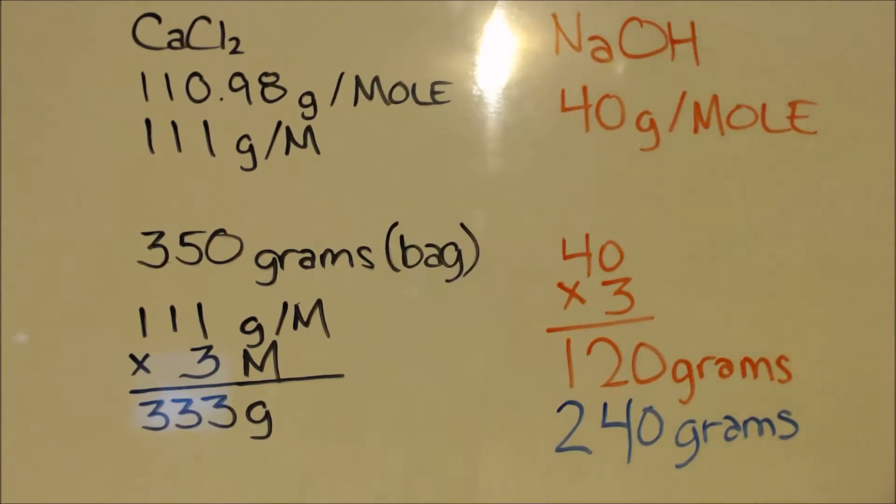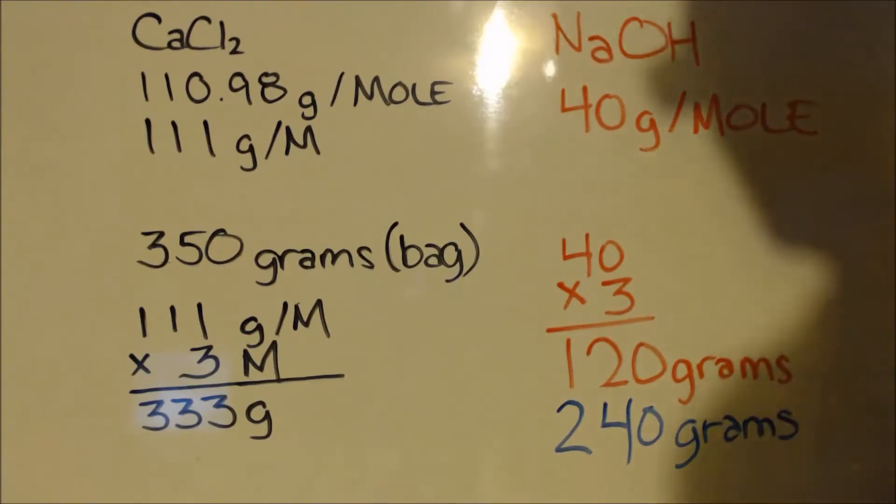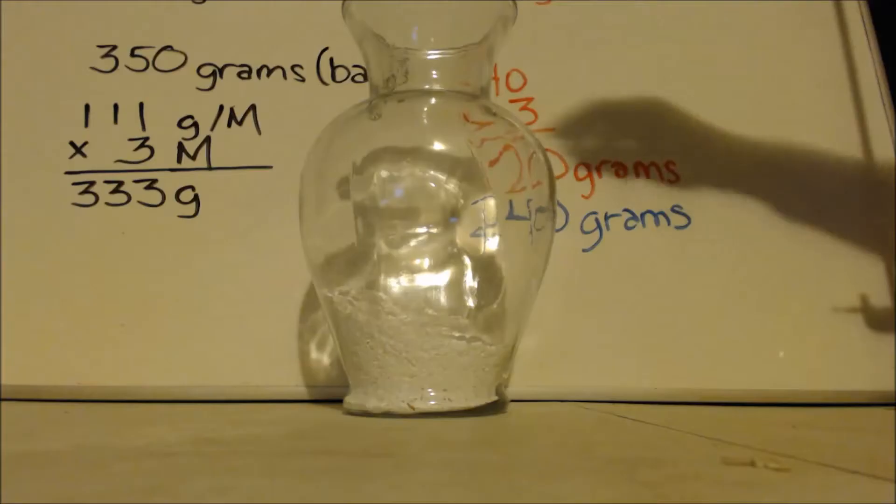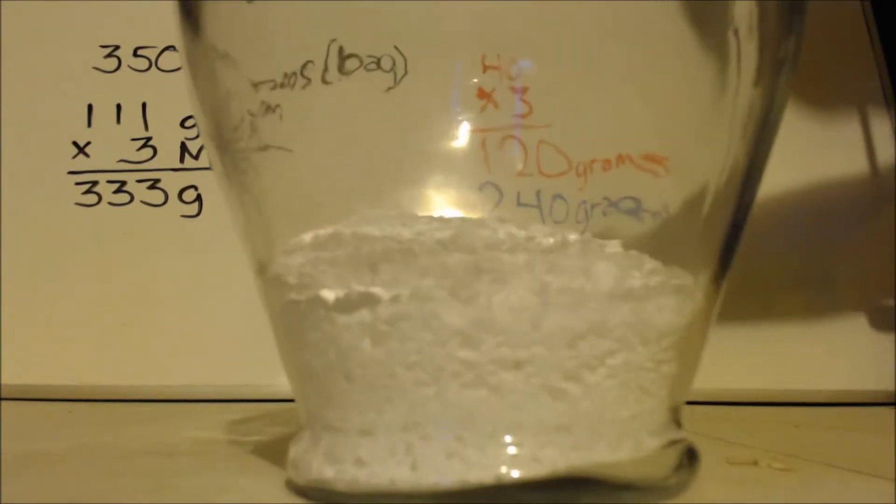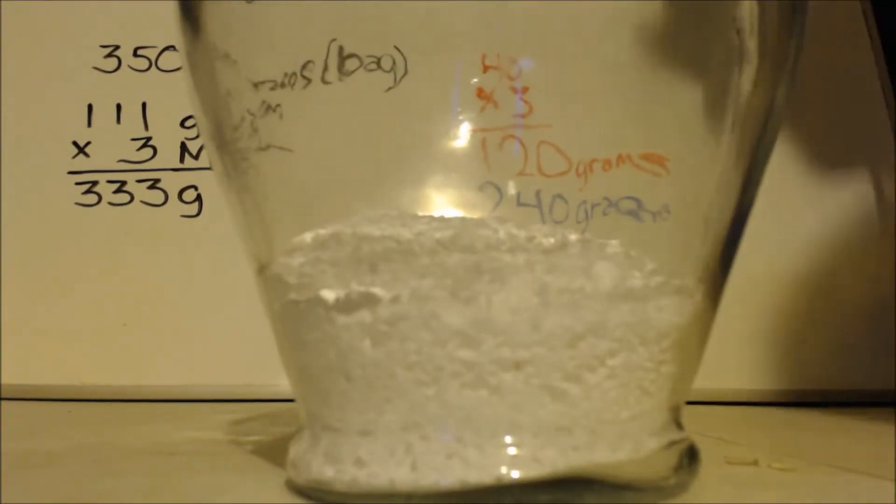But this comes out of solution when you have a basic solution, so I'm going to have to add even more than that. We'll see. Right here I got 350 grams of Damp Rid. I'll get some hot water, put it in there, and let it dissolve.